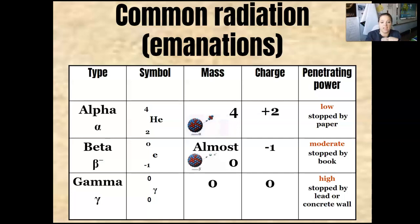And then we have the gamma. The gamma is back. Gamma is definitely just the gamma symbol. There's no mass, there's no charge. Its penetrating power is very high. It is stopped by lead or a concrete wall. So this stuff is the more dangerous stuff.